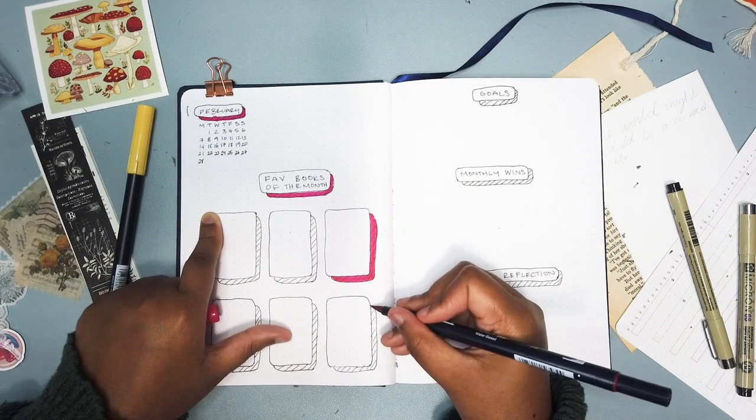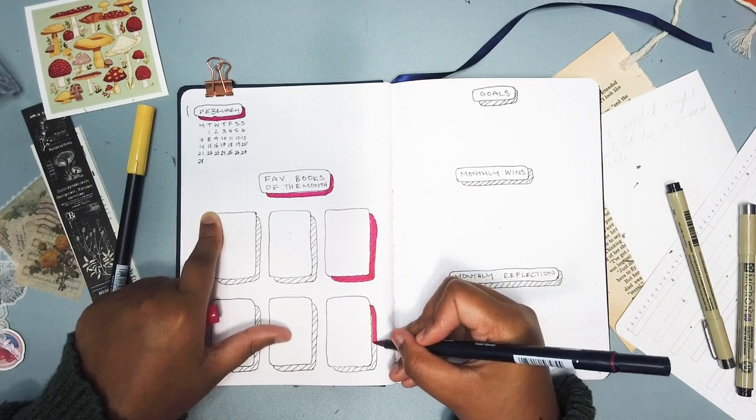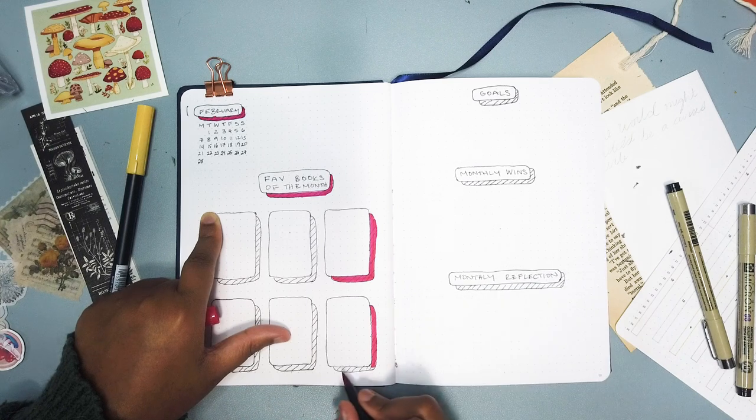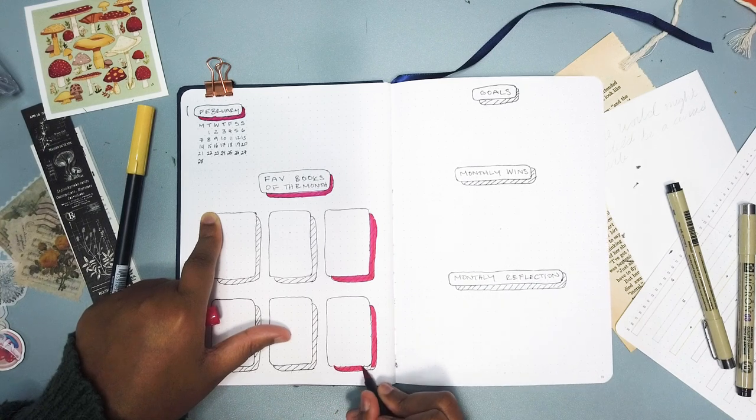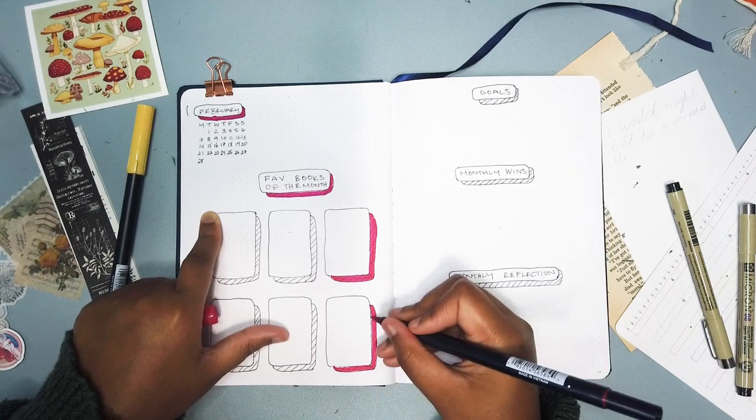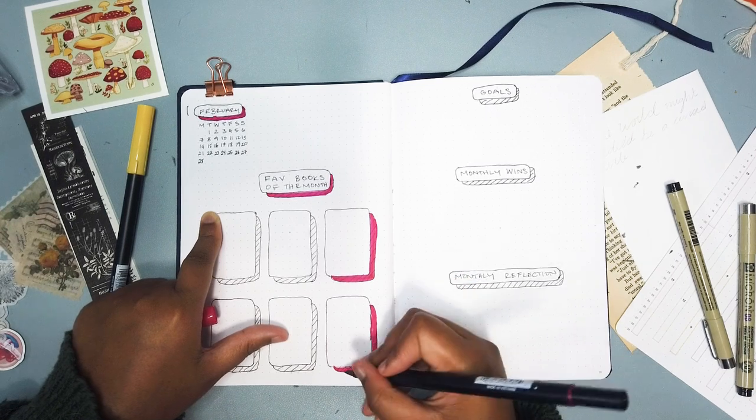And I picked this color because I thought it matched the Mexican Gothic cover well. But then when I put it down on the paper I didn't really like it that much but it was too late. So I just kind of stuck with it.